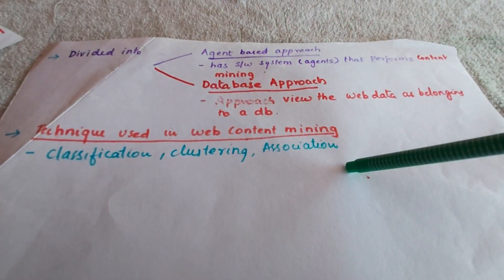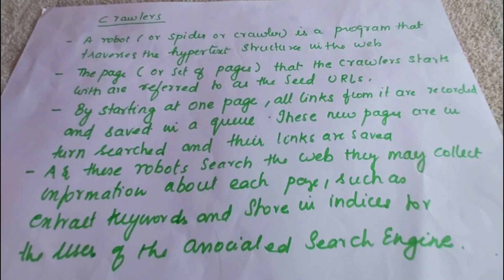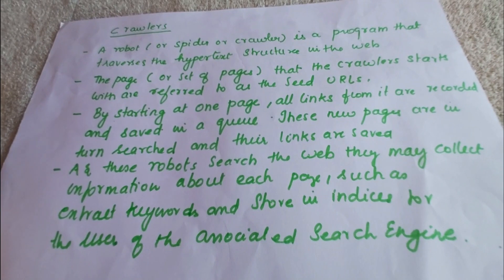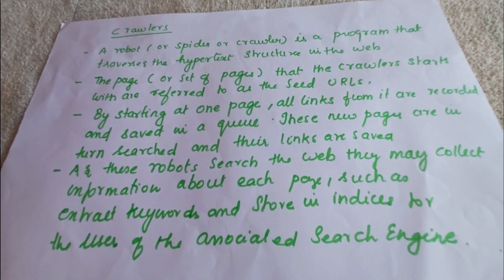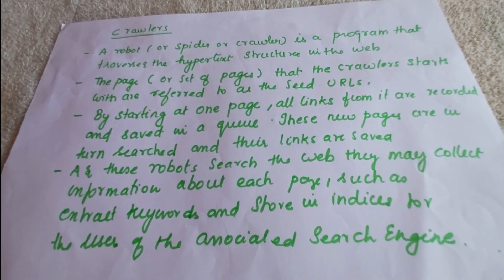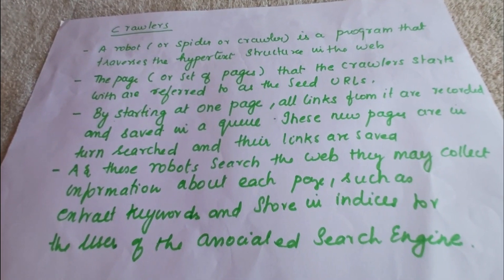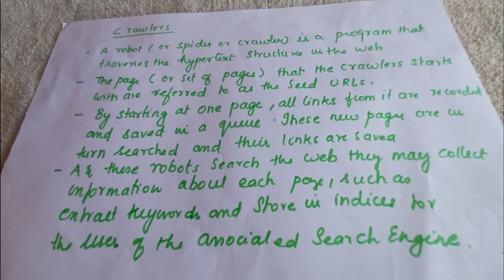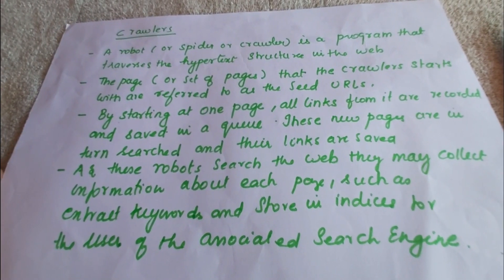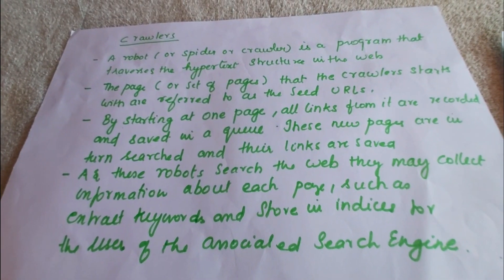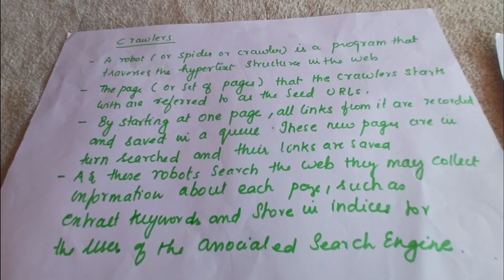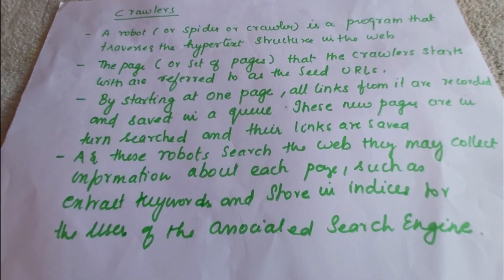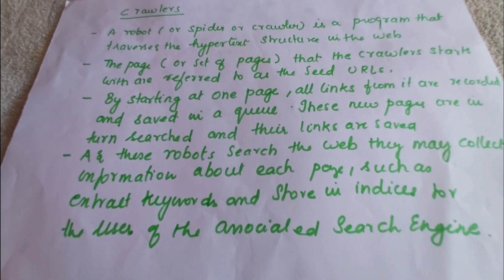A robot, spider, or crawler is a program that traverses the hypertext structure of the web. The page or set of pages that a crawler starts with is referred to as a seed URL. Starting at one page, all the links from it are recorded and saved in a queue. These new pages are in turn searched and their links are again saved. As the robot searches the web, it may collect information about each page, such as extracted keywords, and store them in indices for the associated search engine.